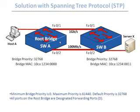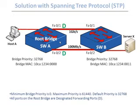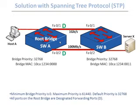All ports on the root bridge are designated forwarding, meaning they are open to send and receive traffic. Just like the saying 'all roads lead to Rome,' all ports on the root bridge are open so every other non-root bridge can establish a loop-free topology pointing to the root bridge as the reference point.